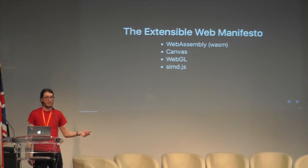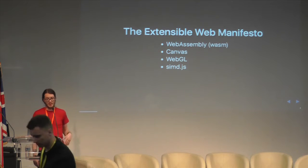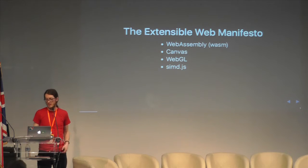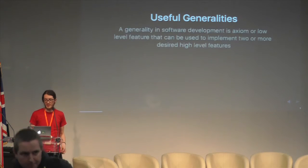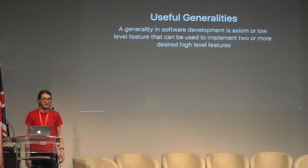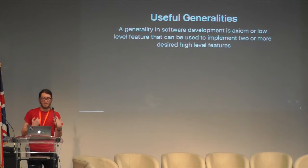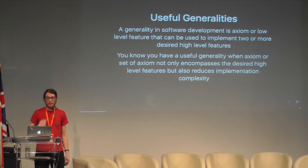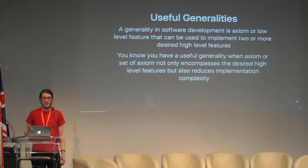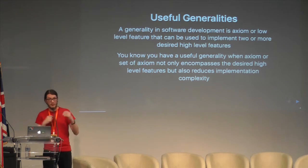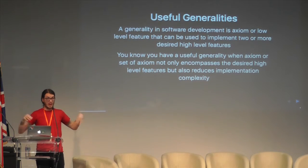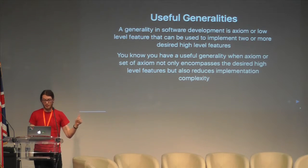Here's some of the things that have come out of the Extensible Web Manifesto: WebAssembly, WASM, Canvas, WebGL, SIMD.js. I think the overall picture here is that these things are useful generalities. I define a generality in software development as an axiom or a low-level feature that can be used to implement two or more desired high-level features. And you know you have a useful generality when an axiom or a set of axioms not only encompasses the desired high-level feature, but also reduces your implementation's complexity. So if you can find something that describes a bunch of things that people want and reduces implementation complexity, you know you're going on the right path.